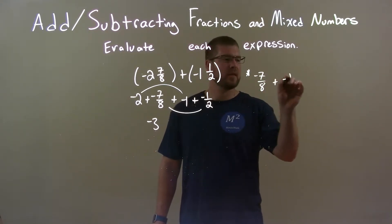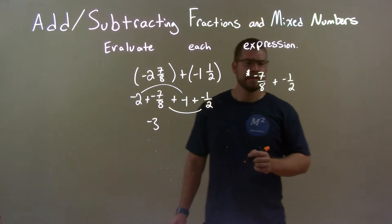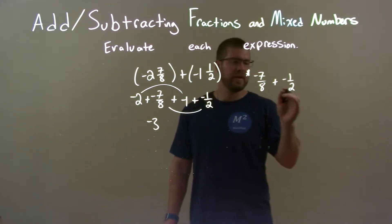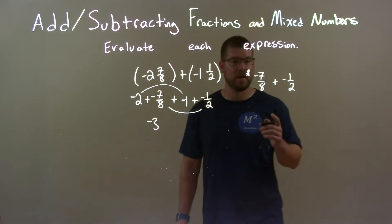Negative 7 eighths plus a negative 1 half. Well, what I want to do is I can't add these until the denominators are the same. We have an 8 here and a 2 here in the denominator.